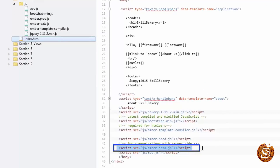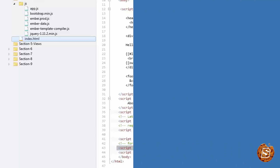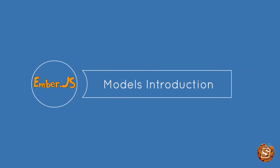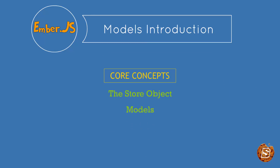Here you can see EmberData.js. Now, in order to better understand models in Ember.js, we first have to understand some of the core concepts that EmberData brings. The first thing is the store object. The store can be considered as a central repository of records in our application. We can think of the store as a cache of all the records available in our application. Both the application's controllers and routes have access to this shared store.